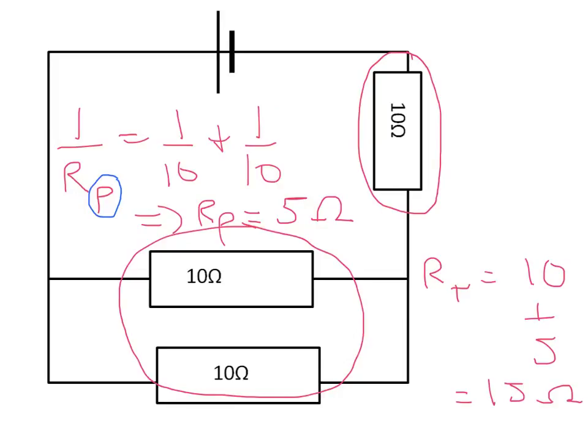So by making a slight change to your circuit, you've actually changed the resistance from 3.3, which it was before, to in this case, 15 ohms, which sort of ties up the theory because series circuits tend to have a higher resistance than similar ones in parallel.